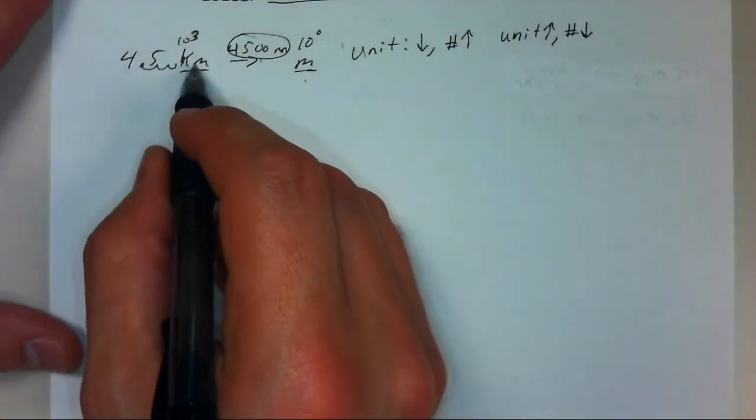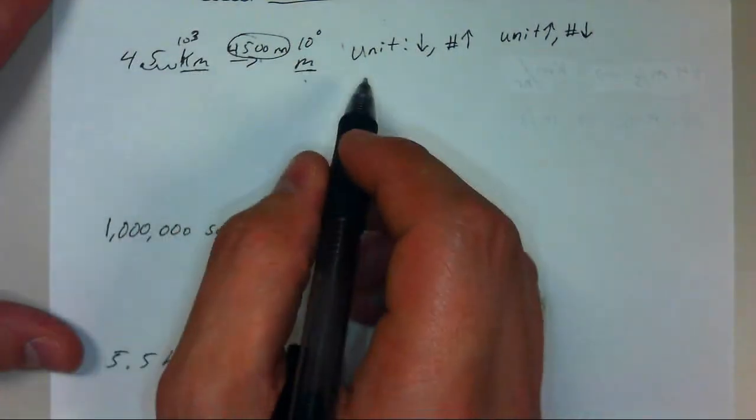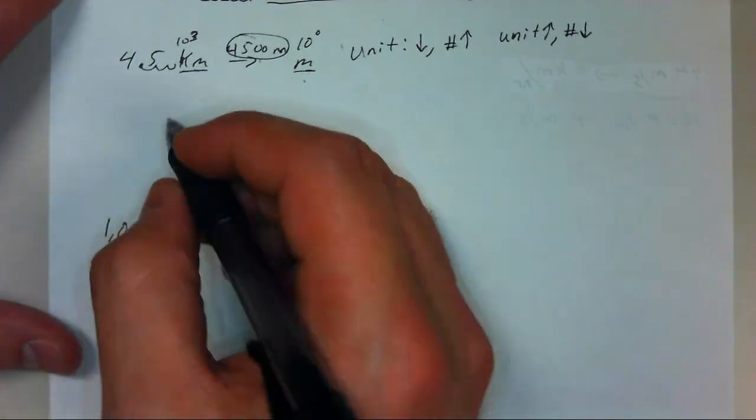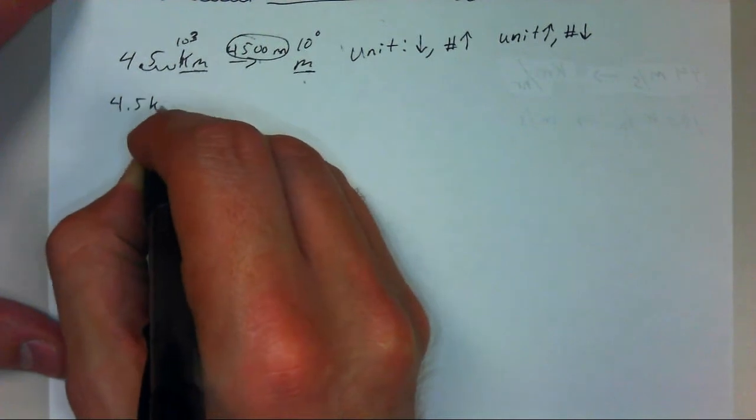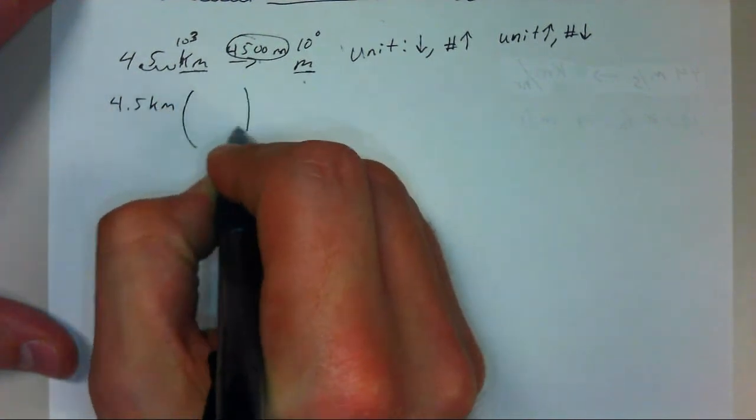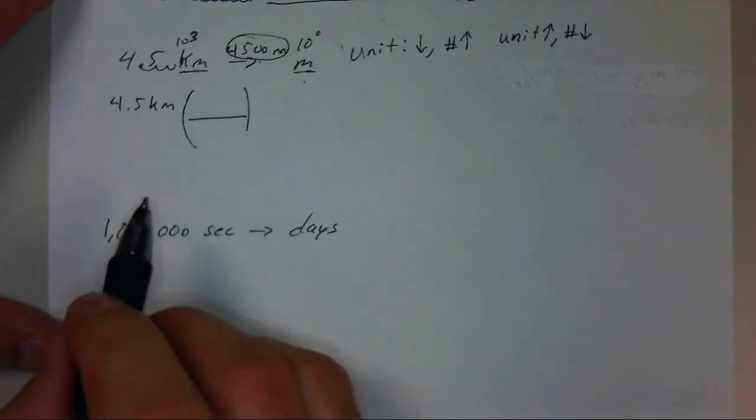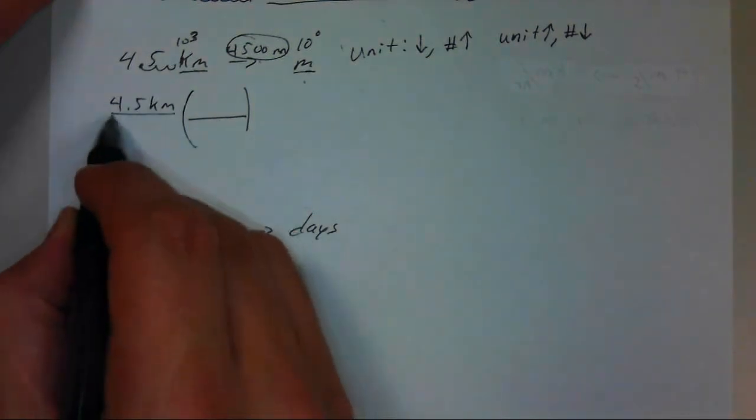What unit analysis does is it basically is a way to cancel out the units and still not change the value of this number. So we'll start here with 4.5 kilometers. And we're going to multiply this by something that's equal to 1. Because if you multiply anything by 1, you don't change its actual value.